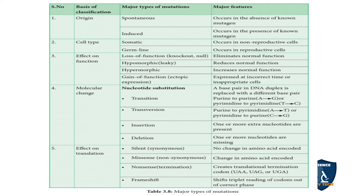Effects on function: loss of function mutations include knockout or null, which eliminates normal function. Hypomorphic, also called leaky, occurs due to some suppressive action causing leakage, and it reduces normal function.